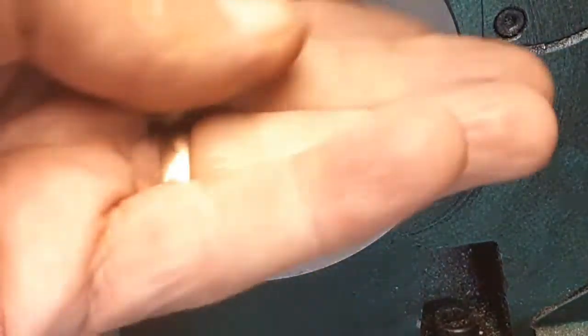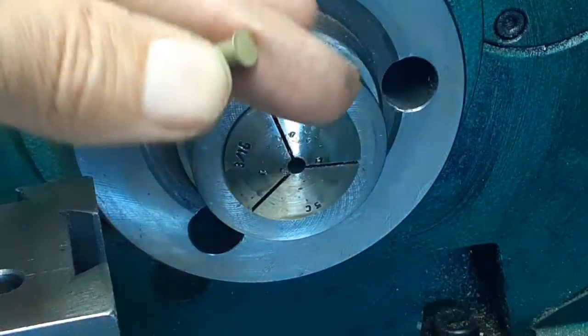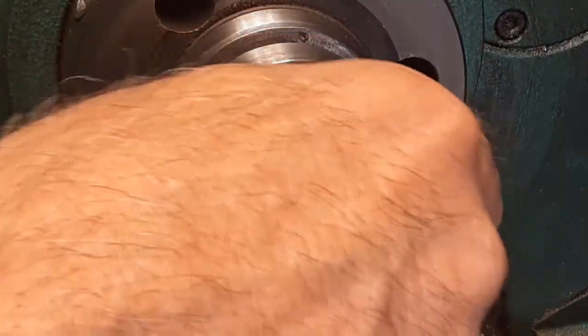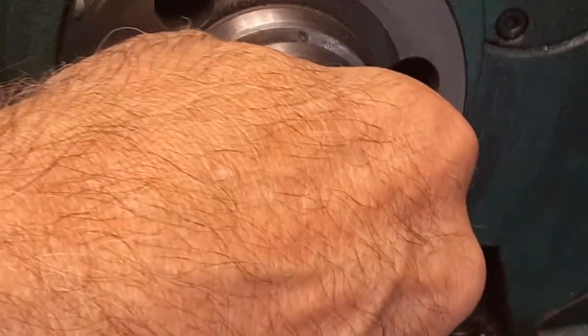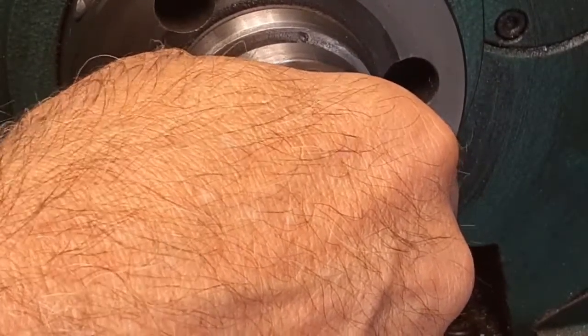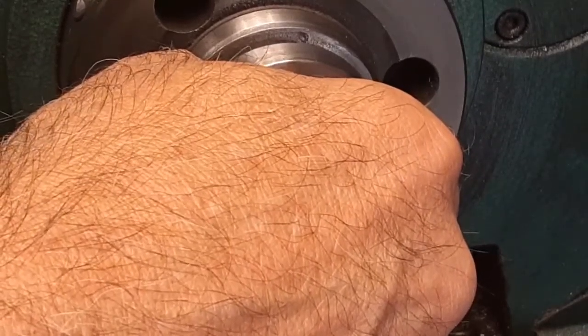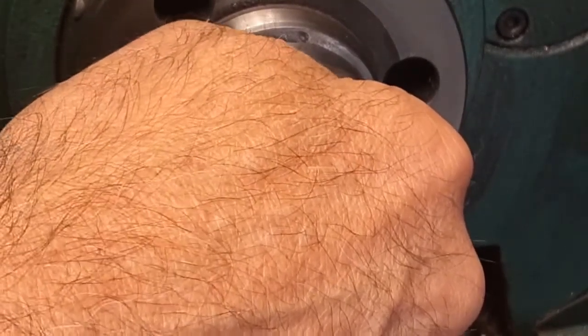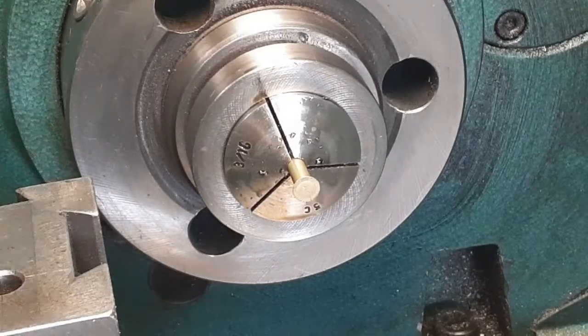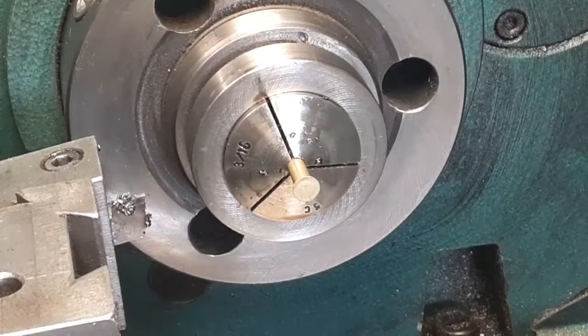Okay, I have some 3/16ths rivets. That's what I'll make a sleeve out of. So I'll just stick a rivet in there. There we go. And I'll take the head of it off.